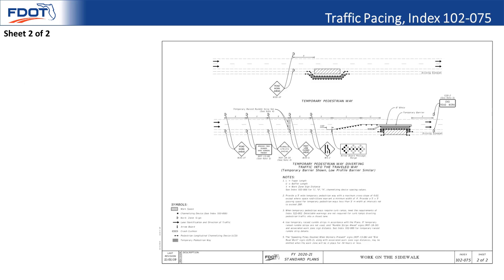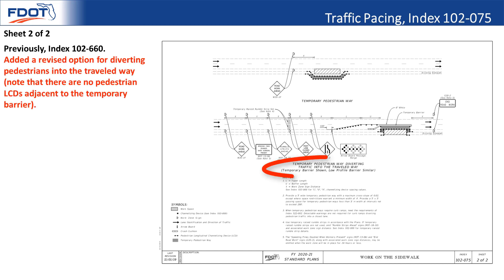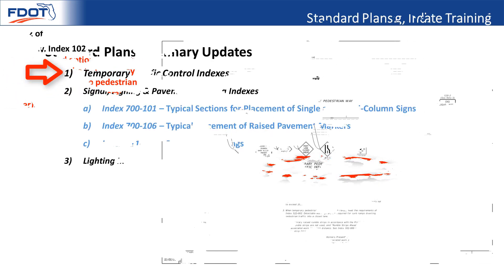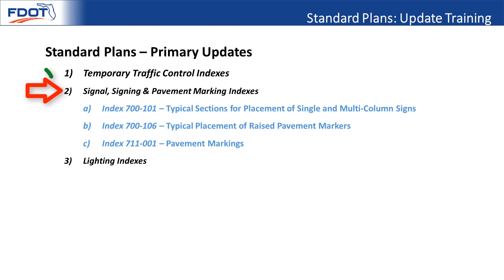Index 102-075, previously index 102-660: the biggest change is a revised option for diverting pedestrians into the travel lane. Also the criteria for the usage of pedestrian LCDs has changed slightly — if a barrier is being used, no LCDs are required adjacent to that barrier. LCDs are placed between the temporary pedestrian lane and the work zone, while only temporary barrier is on the other side of the pedestrian lane.